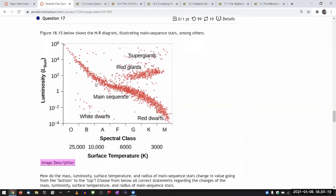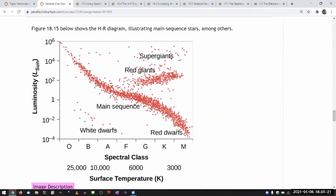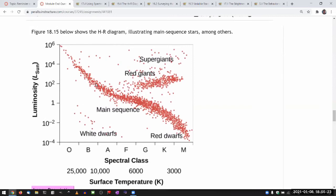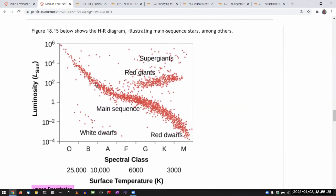So this is the HR diagram. This is what we spent some time talking about yesterday, and it's a way to classify different types of stars.